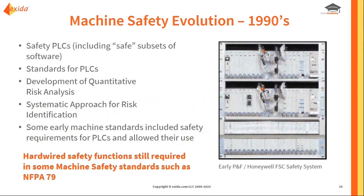If we look at the 1990s, now we start to get what we would call safety PLCs, guidelines for developing safe subsets of software, specific standards for designing the PLCs, more quantitative risk analysis, and a more systematic approach for risk identification. Some of the machine safety standards now include requirements for PLCs and their use. European standards started to adopt this first — defining what requirements you had to meet if you were going to use a safety PLC for machine safety. But in the U.S., it was still forced to use hardwired relays.